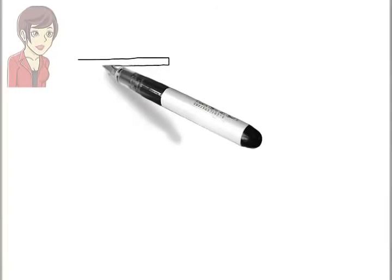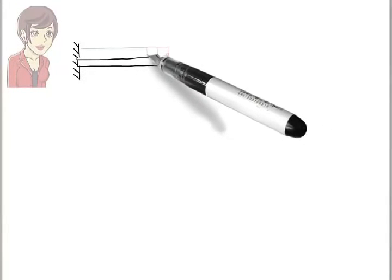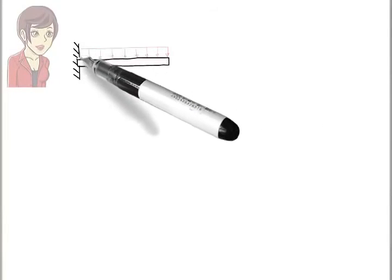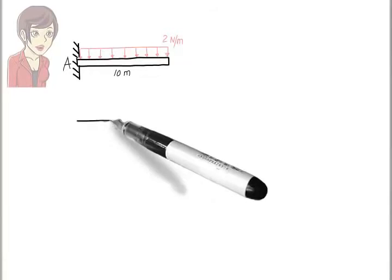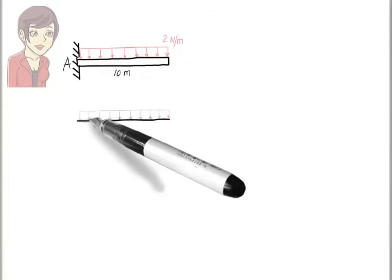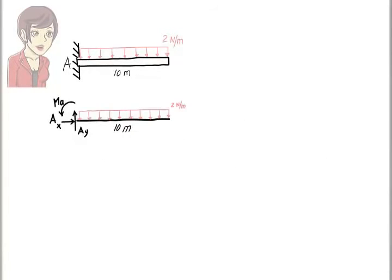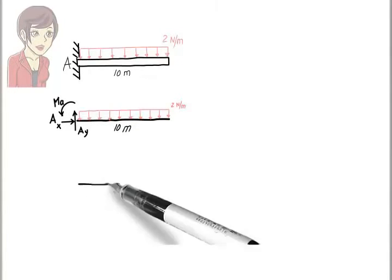Before we end this session, let's look at two more examples. Here, we have a cantilever beam subjected to a uniformly distributed load. Let's analyze the beam. First, we draw the free body diagram for the beam. For the purpose of finding the support reactions, we can replace the uniformly distributed load with its equivalent concentrated load.